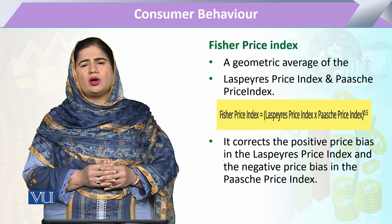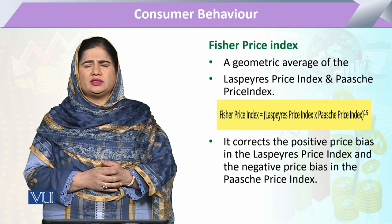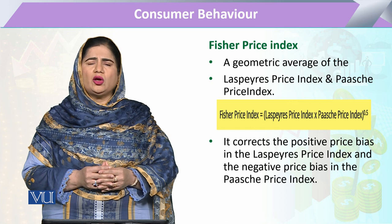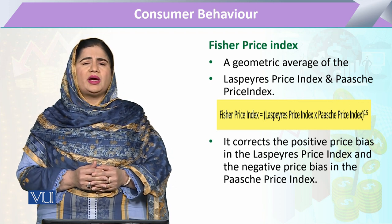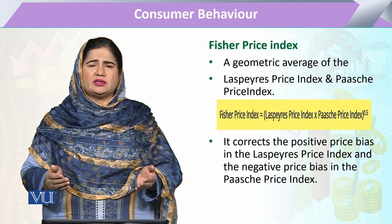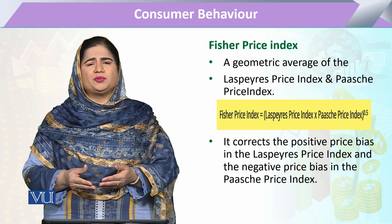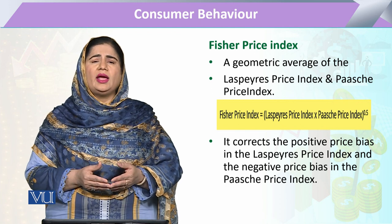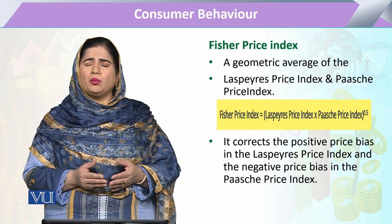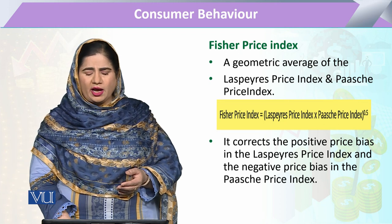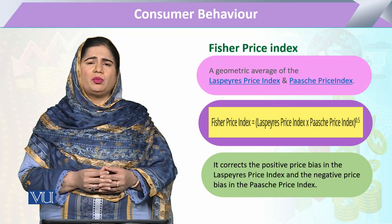Over time we have come to know that both the Paasche index and the Laspeyres index have certain advantages and at the same time certain disadvantages. To overcome this, economists developed a new price index called the Fisher price index. This Fisher price index incorporates the effect of both indexes by taking the weighted geometric average of the Paasche price index and the Laspeyres price index, so the consumer sees a 50% effect from each. Economists utilize both price indexes and explain them in this weighted average form as the Fisher price index.